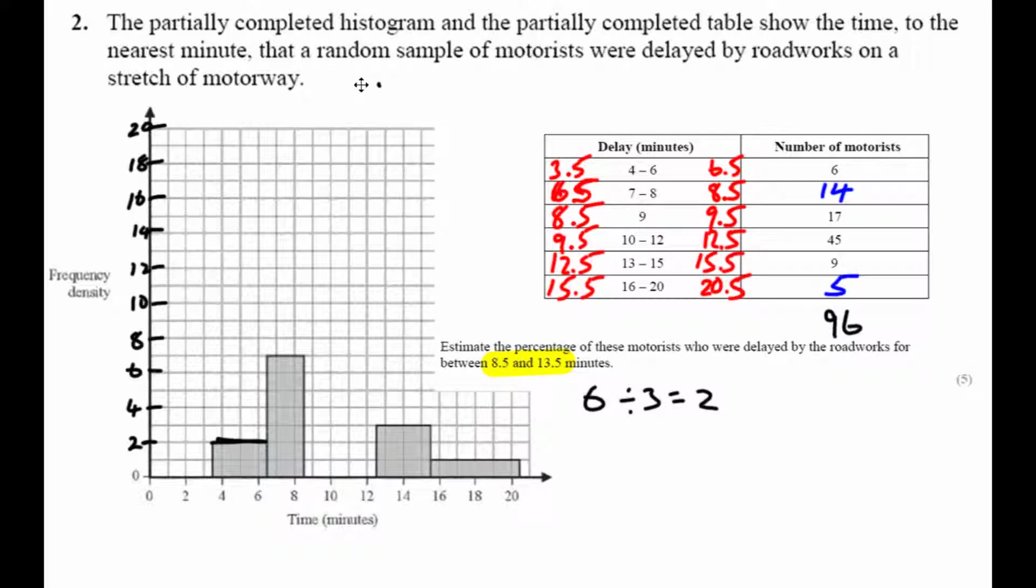Thinking on the table, which of these need to be included? Well, this group starts at 8.5, I want to include all of those. This group will also be included. And only part of the next group is going to be included. But what part of the next group?